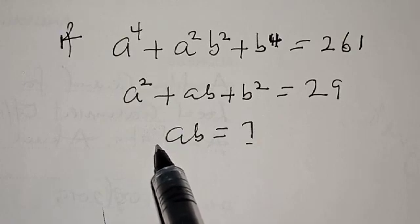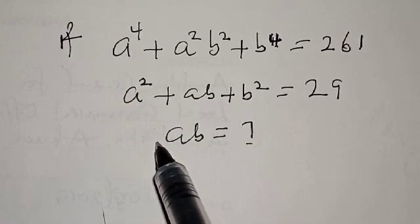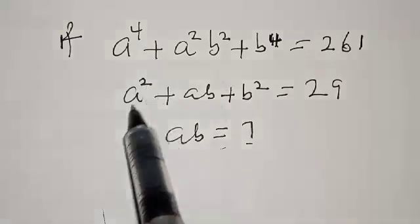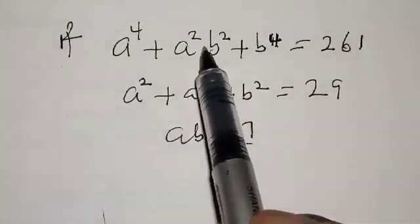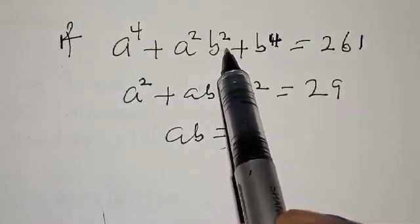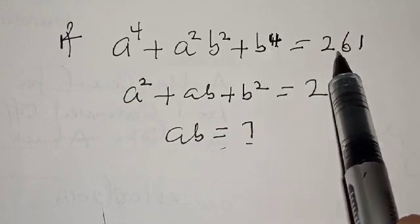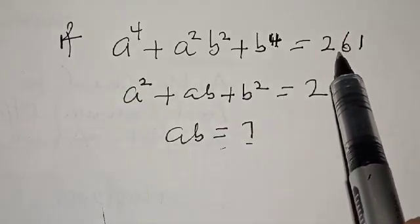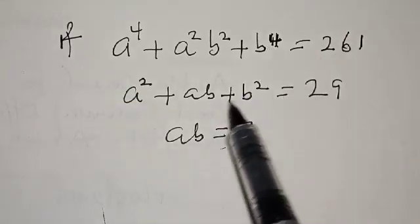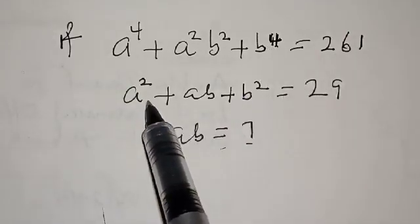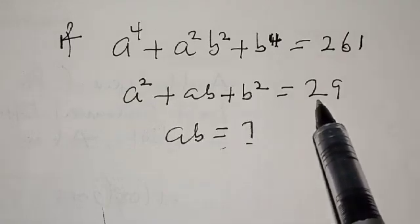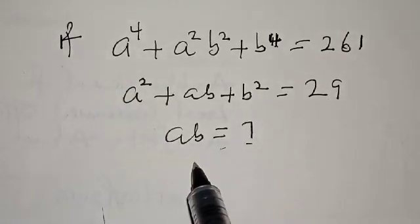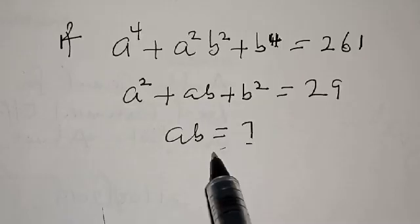Hi everyone, welcome to my class. In this class we want to look at how we can find the value of ab from the given equations: a raised to power 4 plus a squared b squared plus b raised to power 4 equal to 261, and a squared plus ab plus b squared equal to 29.